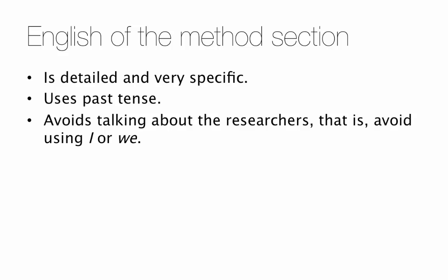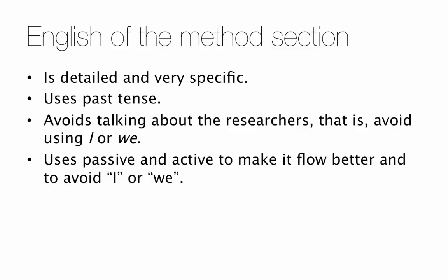Next, generally in science style, we avoid talking about ourselves, the researchers. That is, we avoid using 'I' or 'we.' This makes you sound more scientific and objective. And fourth, the Methods section tends to use a lot of passive sentences. It uses both passive and active, but it tends to use a lot of passive. This makes the paragraph flow better and it helps to avoid using 'I' or 'we.'